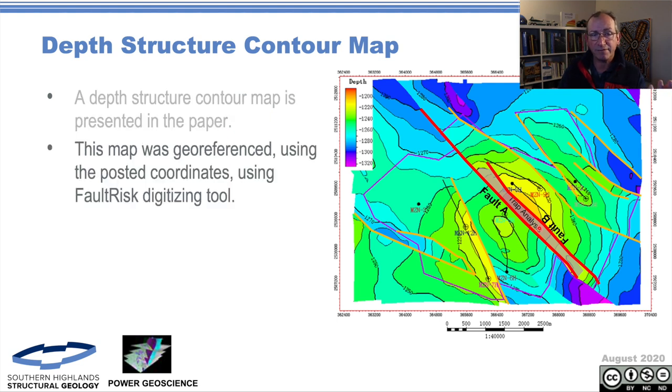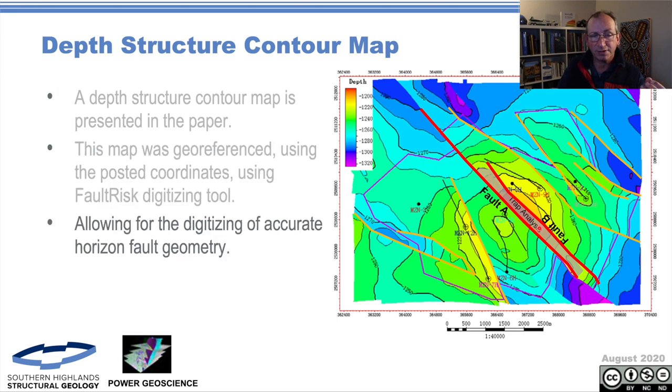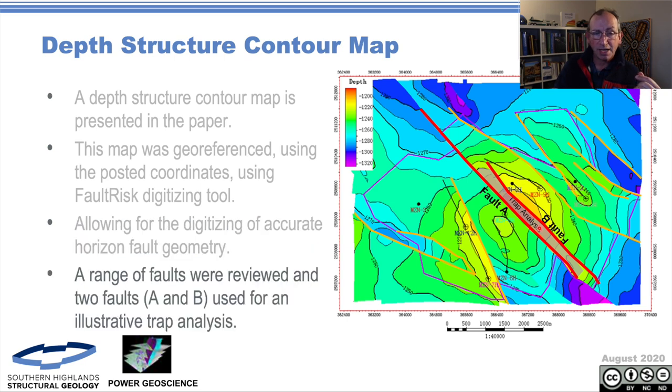So we georeference the map in fault risk, and then use the digitizing tool to digitize the displacement profiles. The fact that we've got all the units there means that we can be pretty accurate about the horizon fault intersections. In particular, it's these A and B fault, or northeast, southwest fault, they're going to be important in this trap.